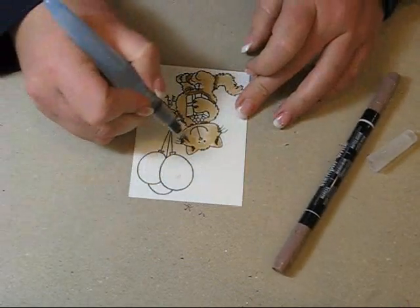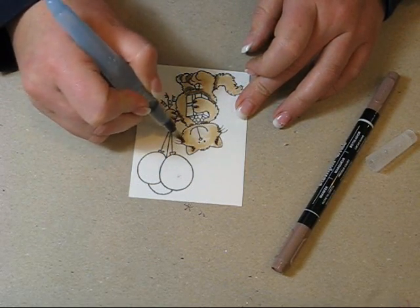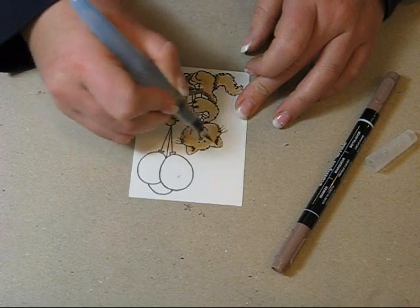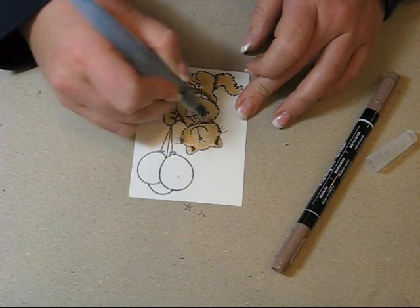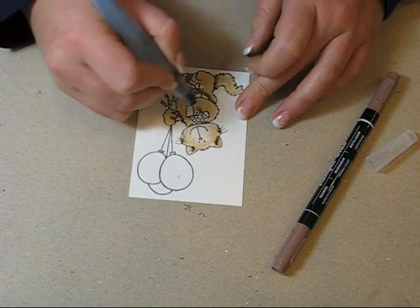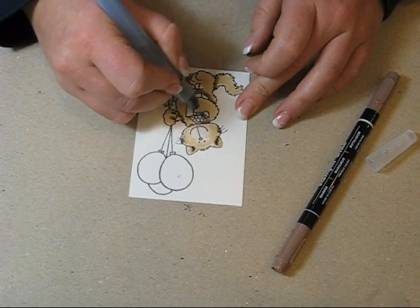And then you take your Aqua Painter and you move that ink around. Don't worry if there's a little bit of white in your image that doesn't get much color.